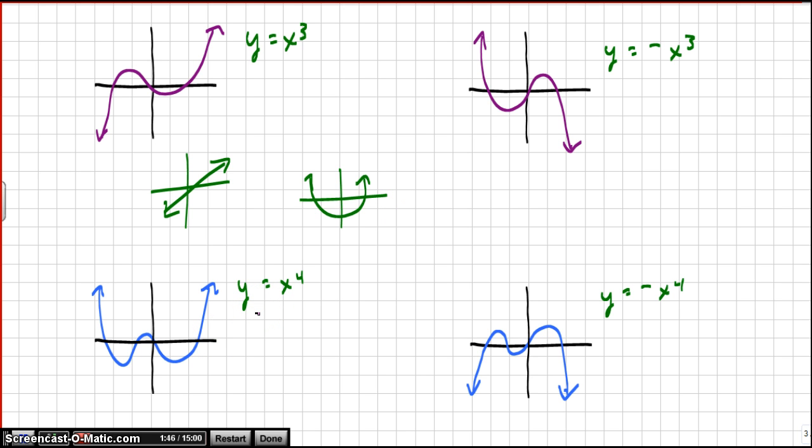We can draw these conclusions, and we can see these patterns for end behavior, because if I draw another, say I draw x to the fifth. If I draw an x to the fifth function, it would be something like this. And if I drew an x to the sixth function, it would look something like this. So as you can see, the pattern persists.